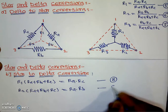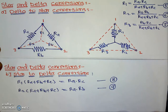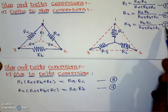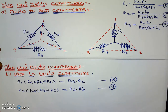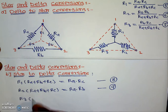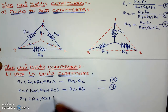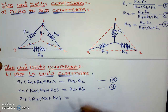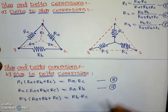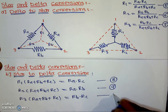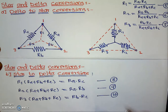We call that equation number 9. And finally, from equation number 7, we have R3 in bracket (Ra plus Rb plus Rc) equals Rb into Rc. We name this equation number 10.